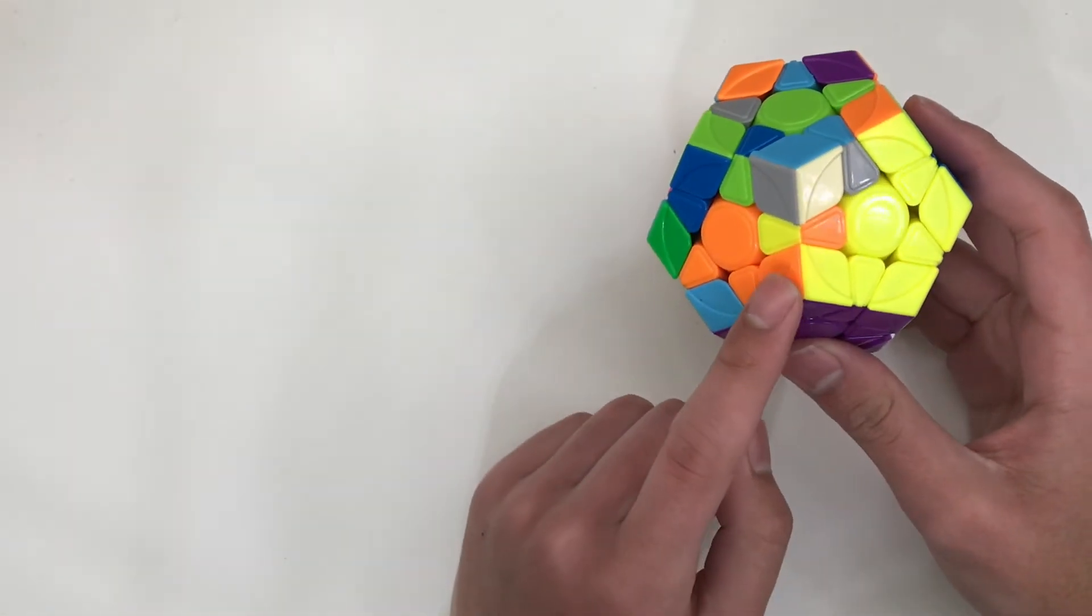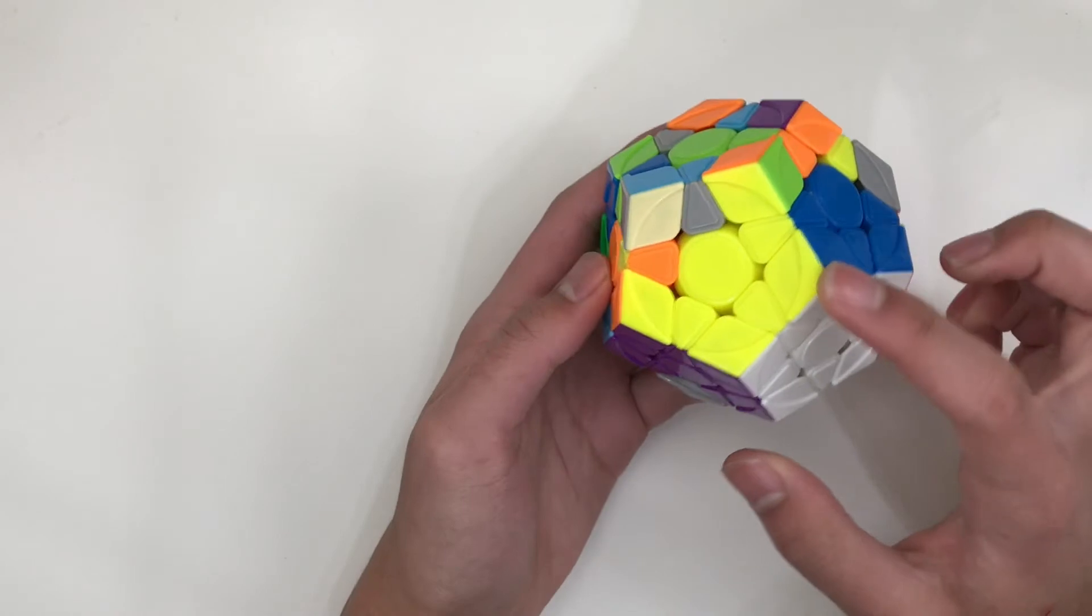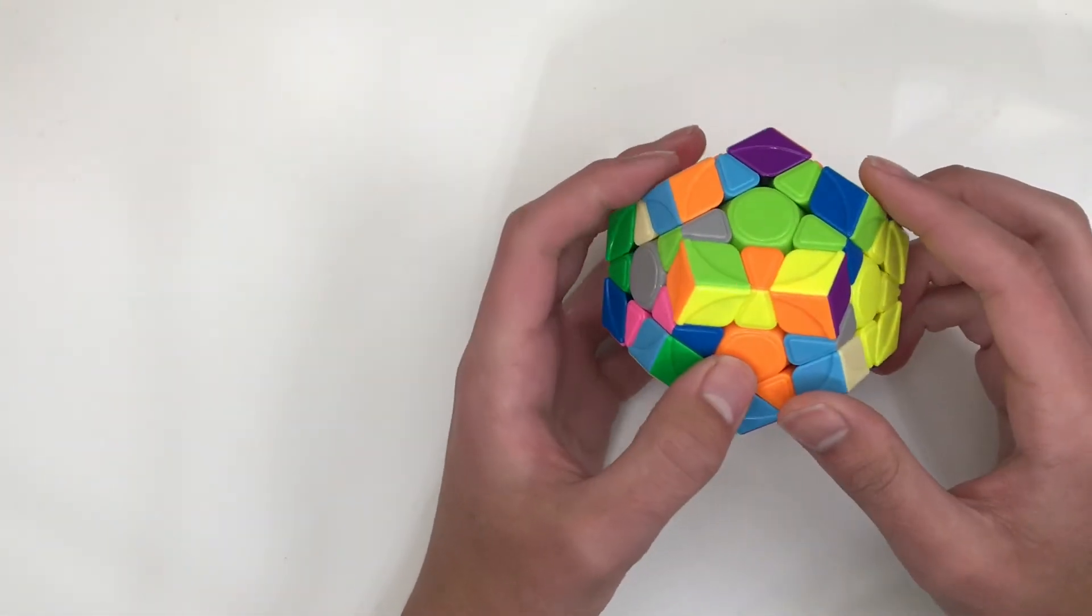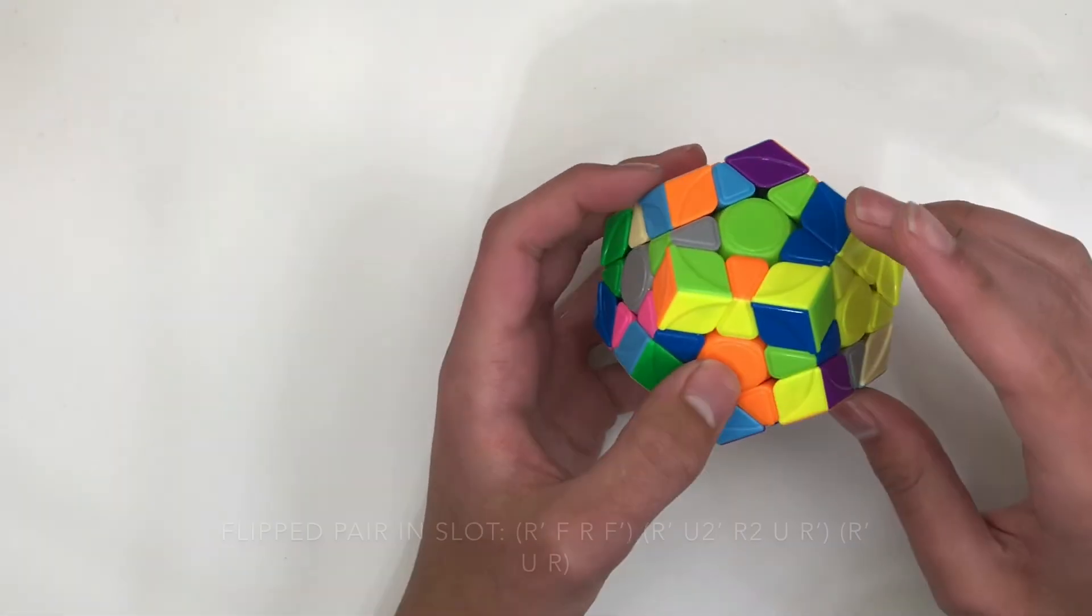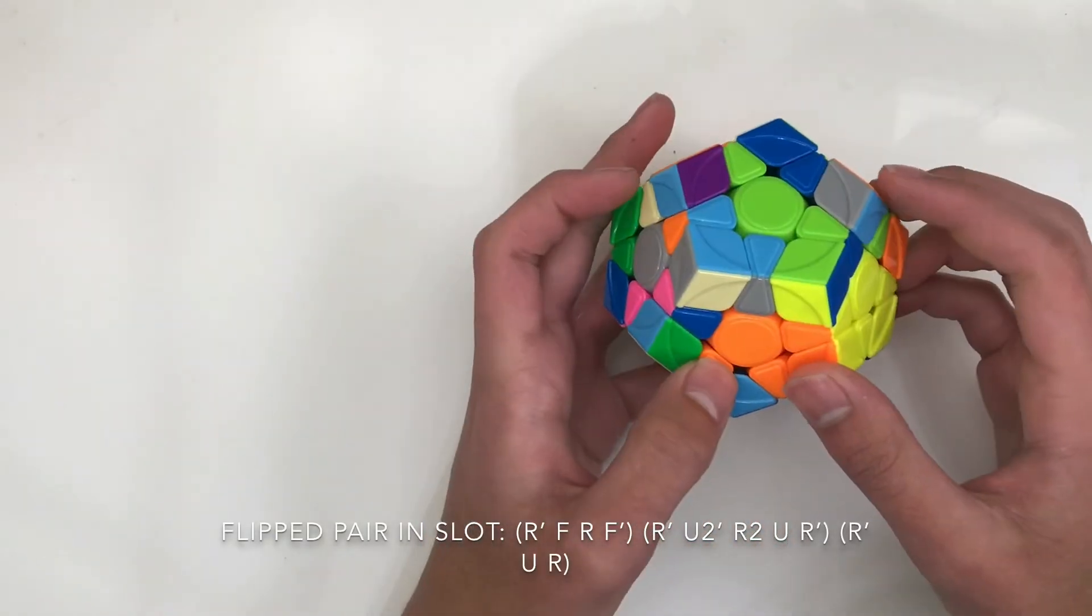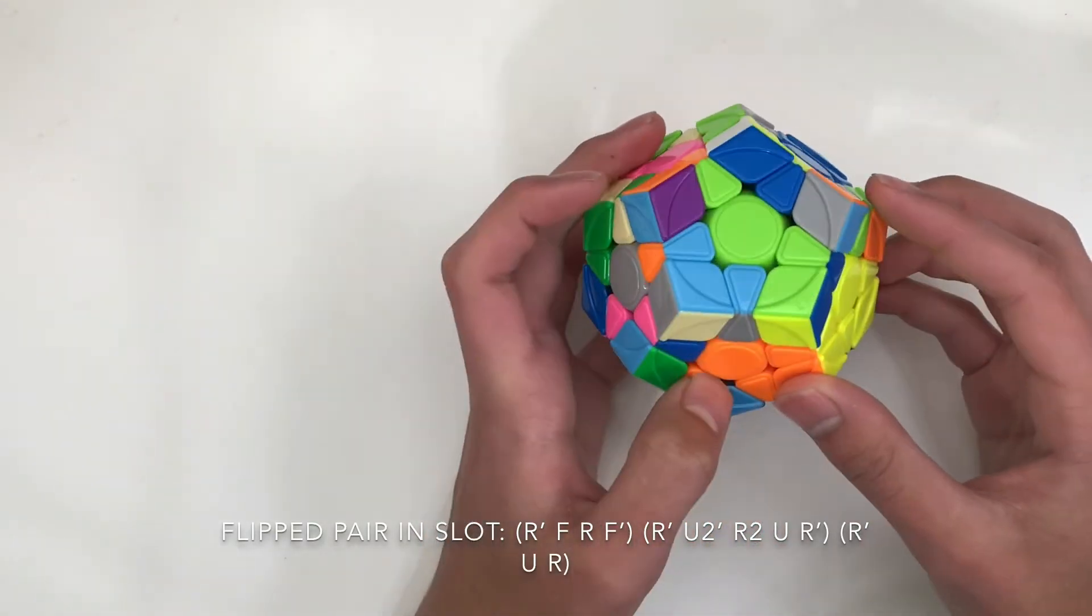You have to be careful though because this alg breaks these two pieces. And so for example in S2L, if we wanted to solve this flipped edge and we had these solved pieces back here, we could take it out with a sledge and then do our flipped alg. And then we just know we have to replace this back here.